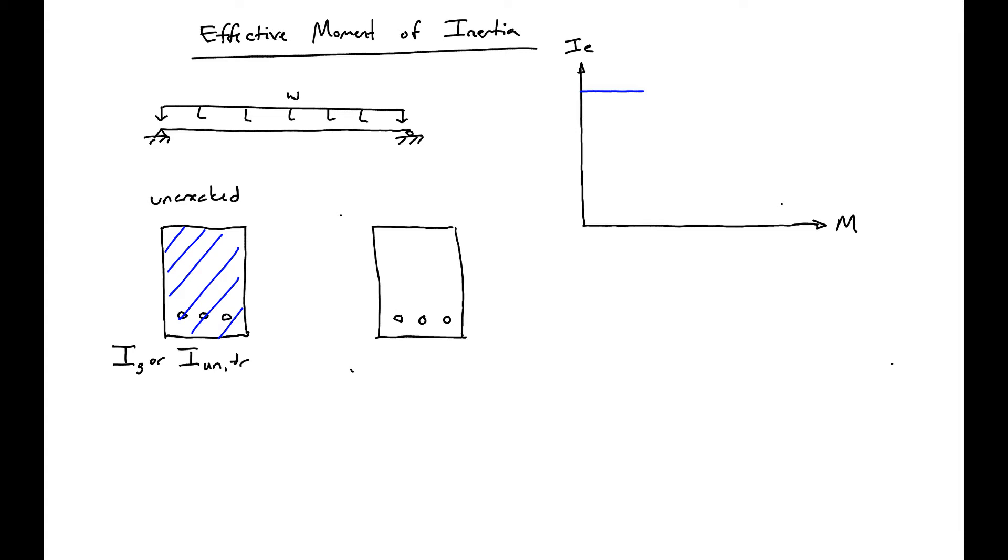What's going to happen then is our section will crack and the stiffness is going to decrease at some rate. It'll decrease down to the point of what we call I crack transformed. This point here will be our cracking moment MCR, and we'll call this MA.